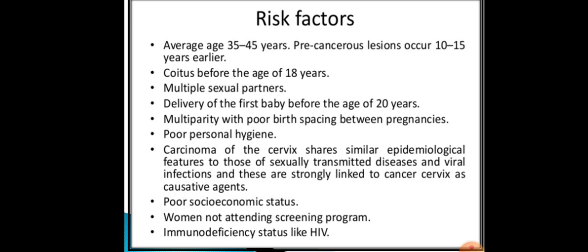Risk factors include: average age 35 to 45 years — pre-cancerous lesion occurred 10 to 15 years earlier. Coitus before age 18: early sexual activity causes HPV infection transmitted through microtrauma during cervical intercourse, causing viral entry to the epithelial basal and parabasal cells of the transformation zone adjacent to the squamocolumnar junction.